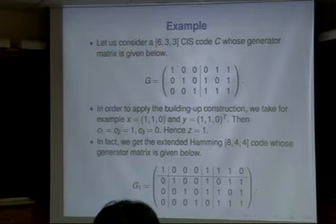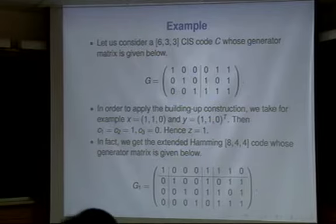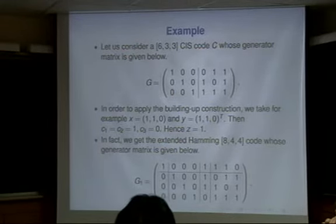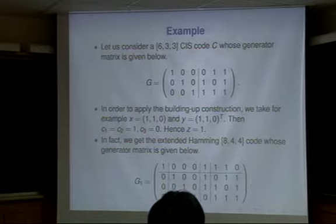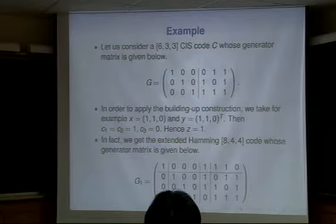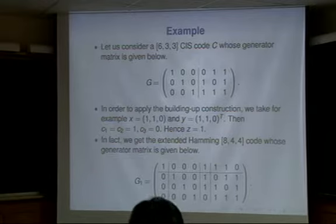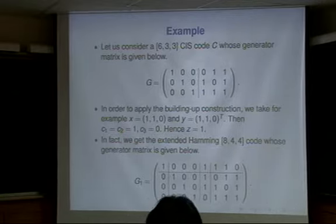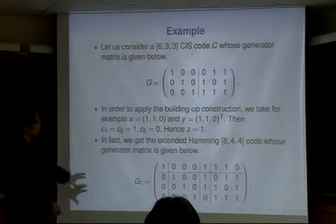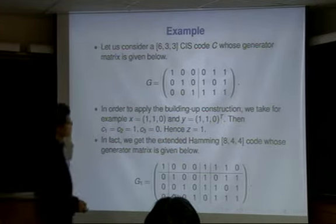Here's an example. Suppose you have a CIS code of length 6. This is invertible, and using the building-up construction, I take X to be (1,1,0) and Y to be (1,1,0). Then Z1 is carefully chosen so that the result is 1. It turns out the whole thing is invertible. In fact, this code is equivalent to the extended Hamming [8,4,4] code. So this is another way to get the extended Hamming code from a length-6 CIS code.